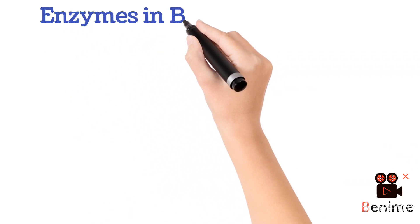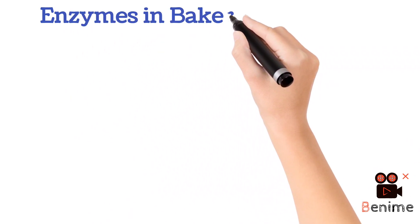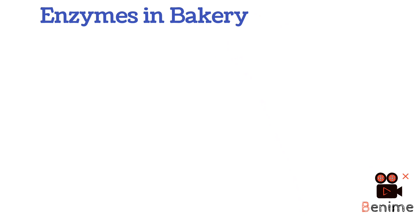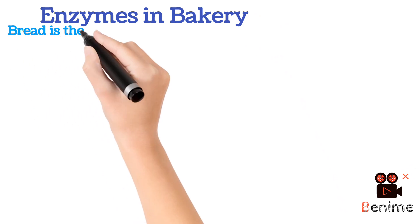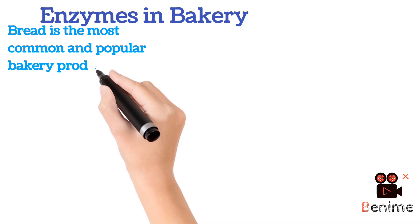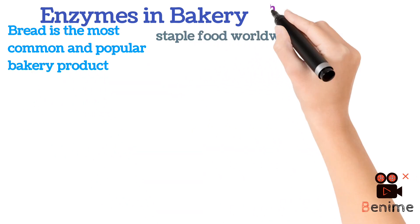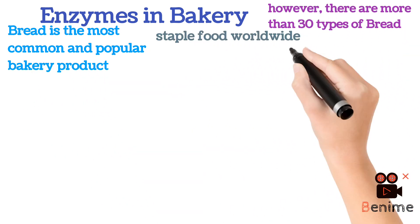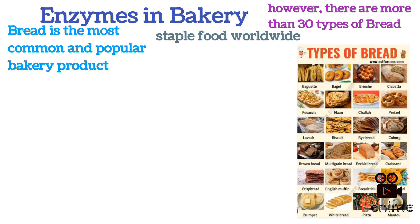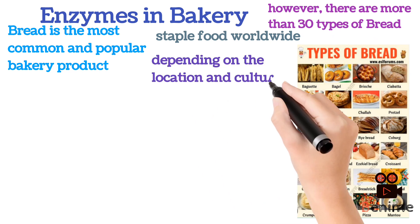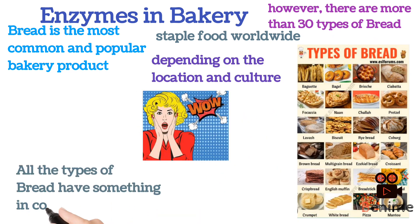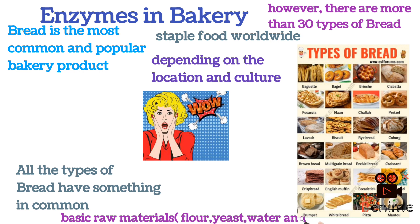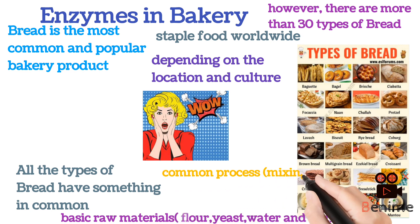Today's video is about the application of food enzymes in the bakery industry. There are many examples of bakery products; however, bread is the most common and popular. There are more than 30 types of breads depending on location and culture. All types of bread share two common aspects: the raw materials and some processing steps.